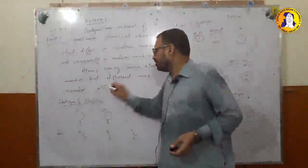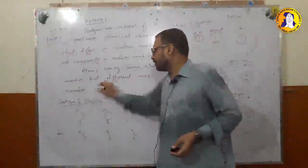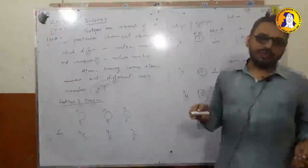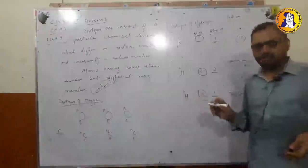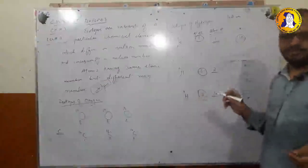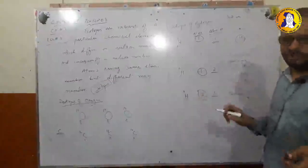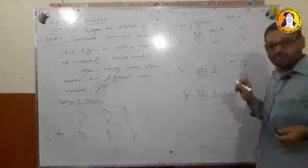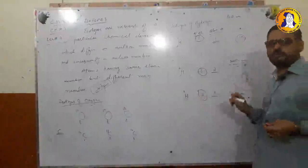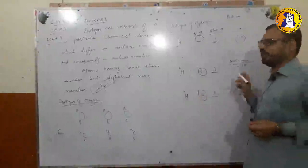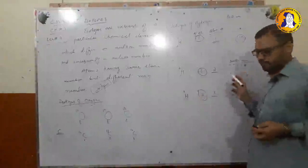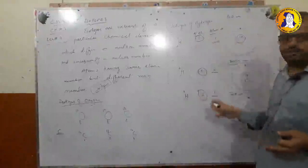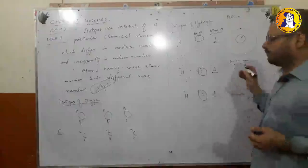Isotopes are atoms of the same element which have the same atomic number — the same number of electrons and protons — but different numbers of neutrons. These are the three different isotopic forms of hydrogen.